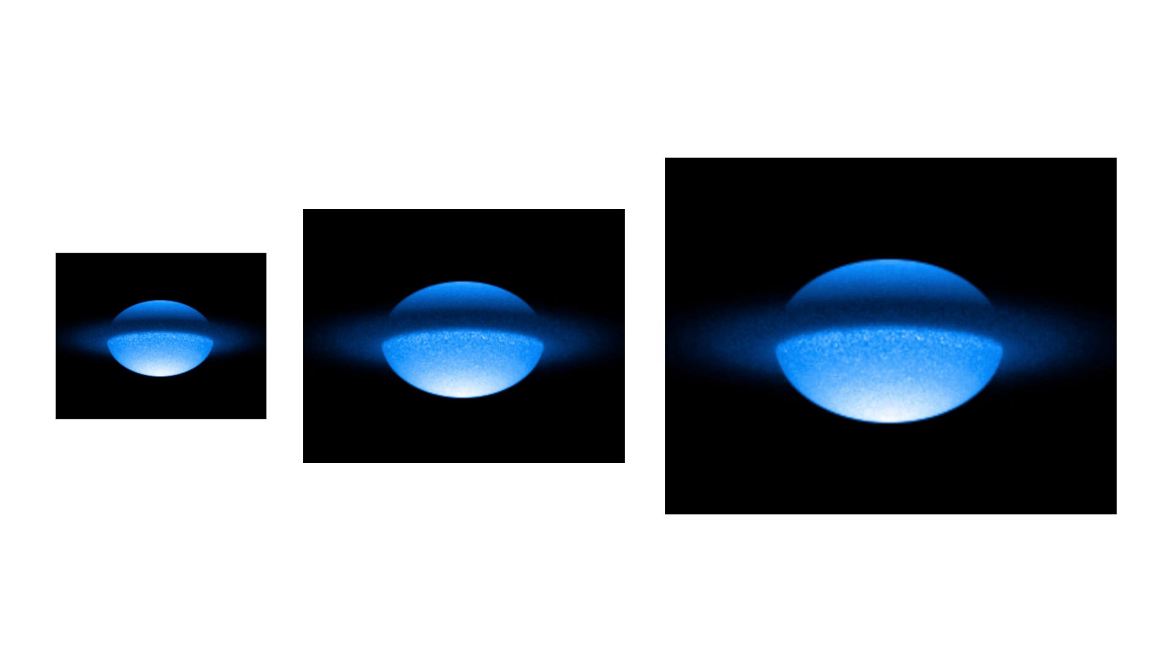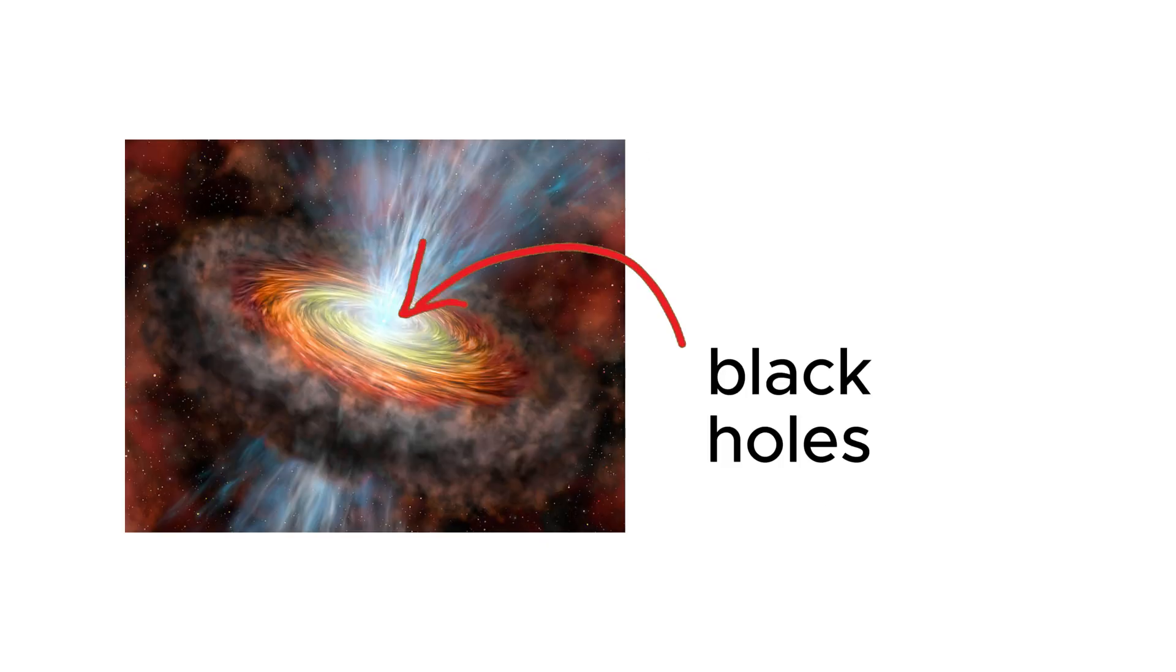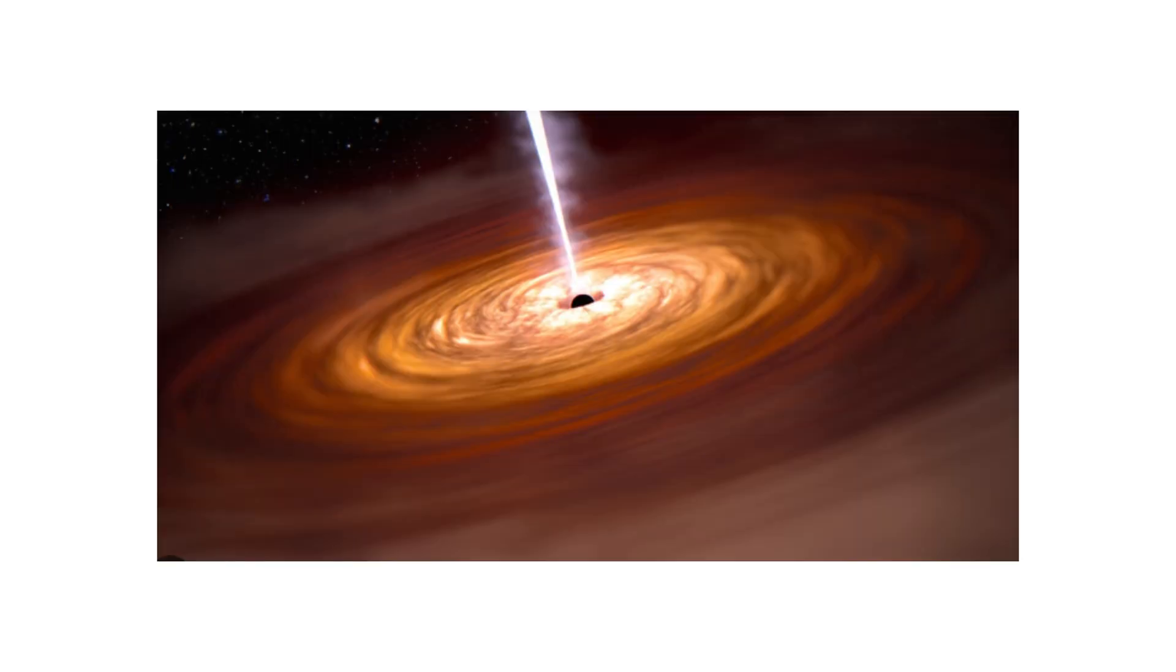Black holes come in different sizes. Stellar black holes form from the remains of massive stars and can be several times more massive than our sun. In addition, supermassive black holes found at the centers of galaxies can be millions or even billions of times more massive than the sun.